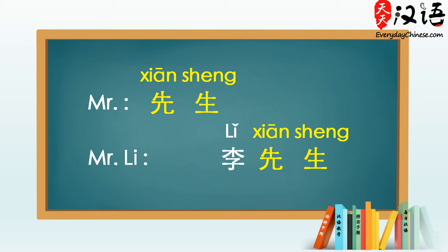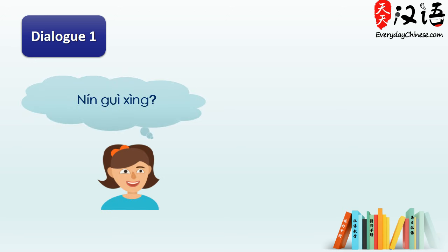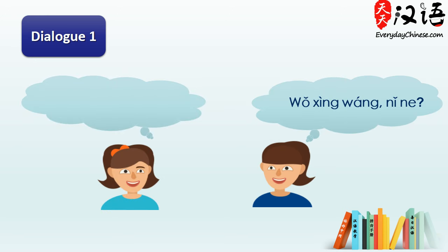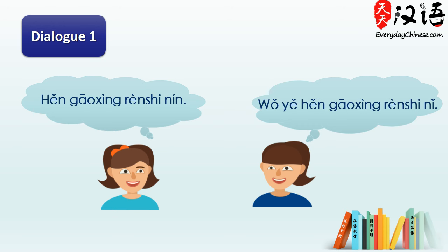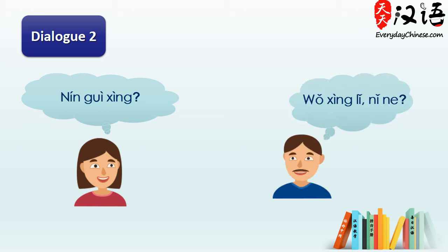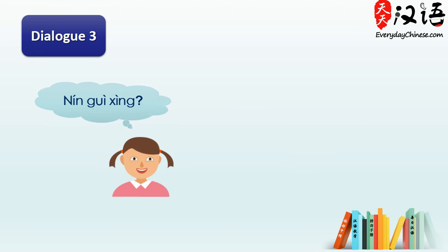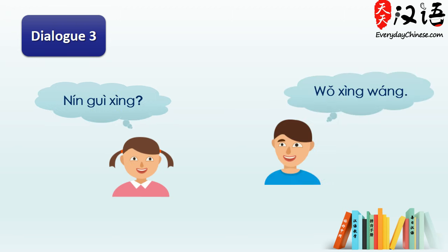Now, listen to the following conversations one more time: 您贵姓? 我姓王，你呢? 我姓陈，很高兴认识您。 我也很高兴认识你。 您贵姓? 我姓李，你呢? 我姓刘，李先生，你好。 刘女士，你好。 您贵姓? 我姓王。